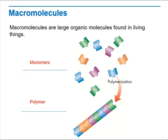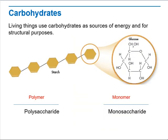Macromolecules are large organic molecules found in living things. We have monomers and polymers. Living things use carbohydrates as a source of energy and for structural purposes. We have starch and glucose — starch being the polymer and glucose the monomer.